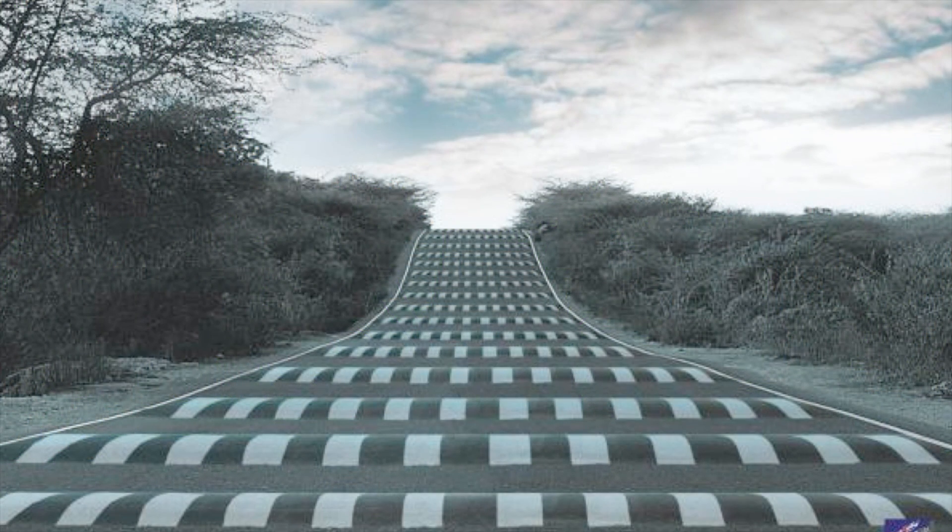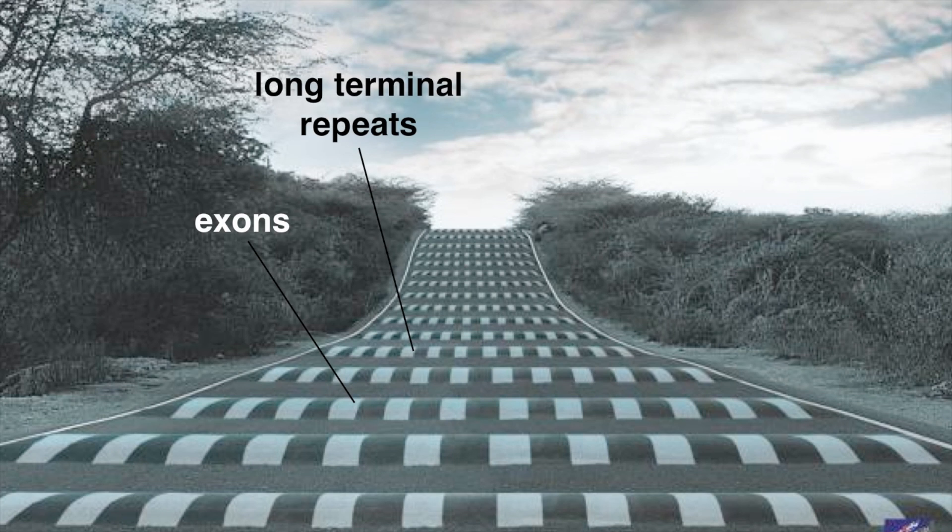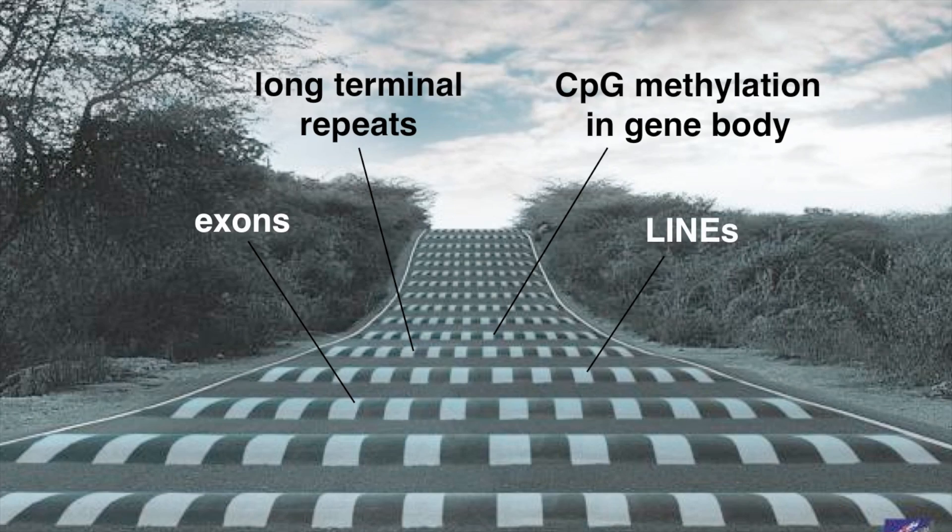Likewise, we found that certain features slowed down elongation, such as exons, long terminal repeats, CPG methylation in the bottom genes, and LINEs.